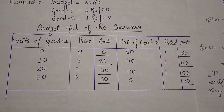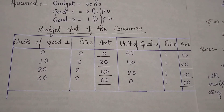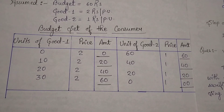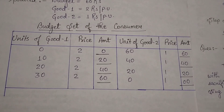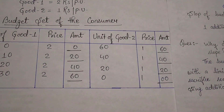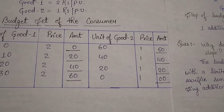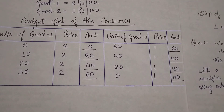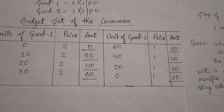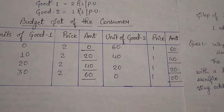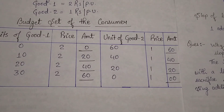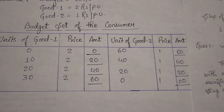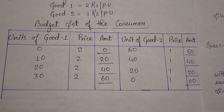For good two: units are 60, 40, 20, 0 at price 1 rupee, giving amounts 60, 40, 20, 0. When we add the amounts for both goods in every combination, we get 60 - for example 0 plus 60 equals 60, 20 plus 40 equals 60. In every case we are exactly equal to the budget of 60. So in every case we are equal to the budget.